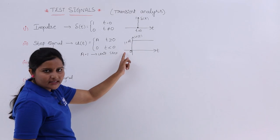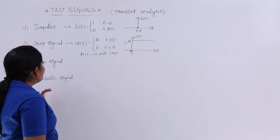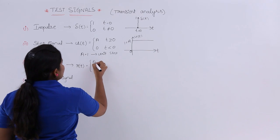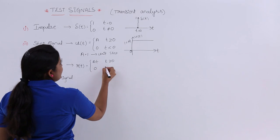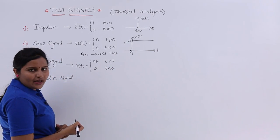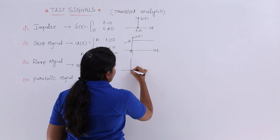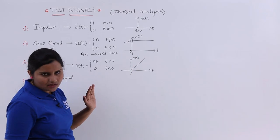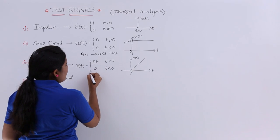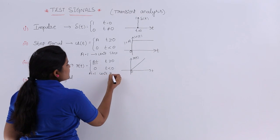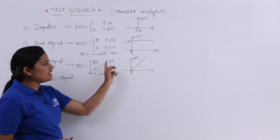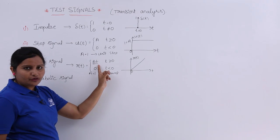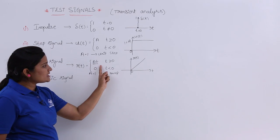The ramp signal is always represented with R(t). The definition of R(t) equals A·t when t is greater than or equal to 0, and 0 when t is less than 0. The shape of the ramp signal is a linear increasing signal for t greater than or equal to 0. When we say unit ramp, the value of A equals 1, so the definition becomes R(t) equals t when t is greater than or equal to 0.